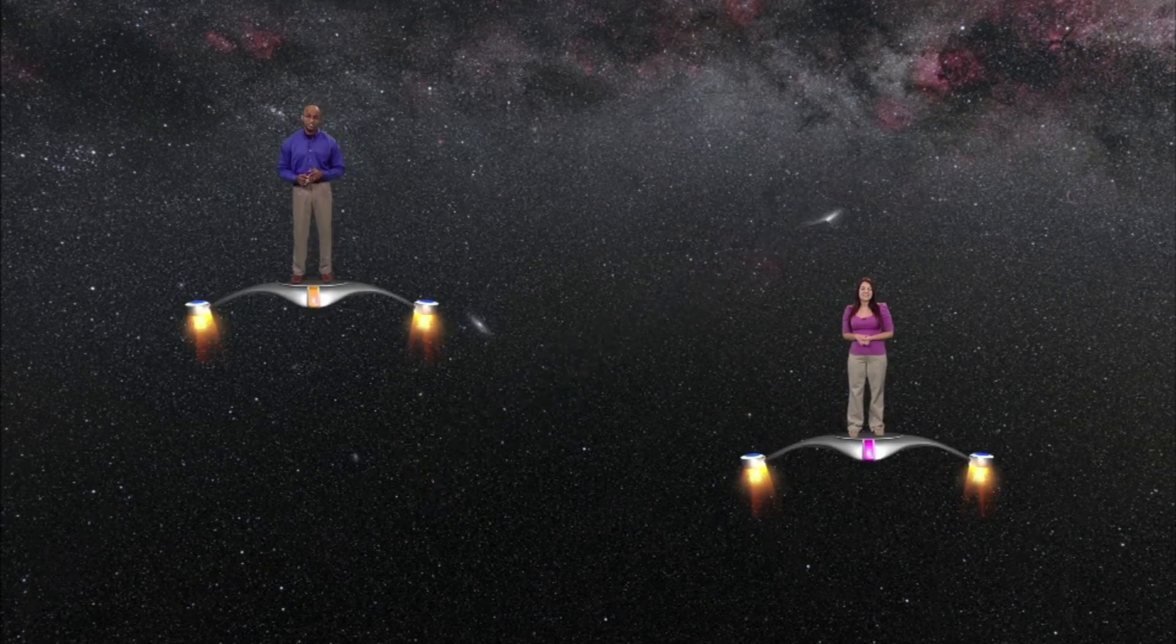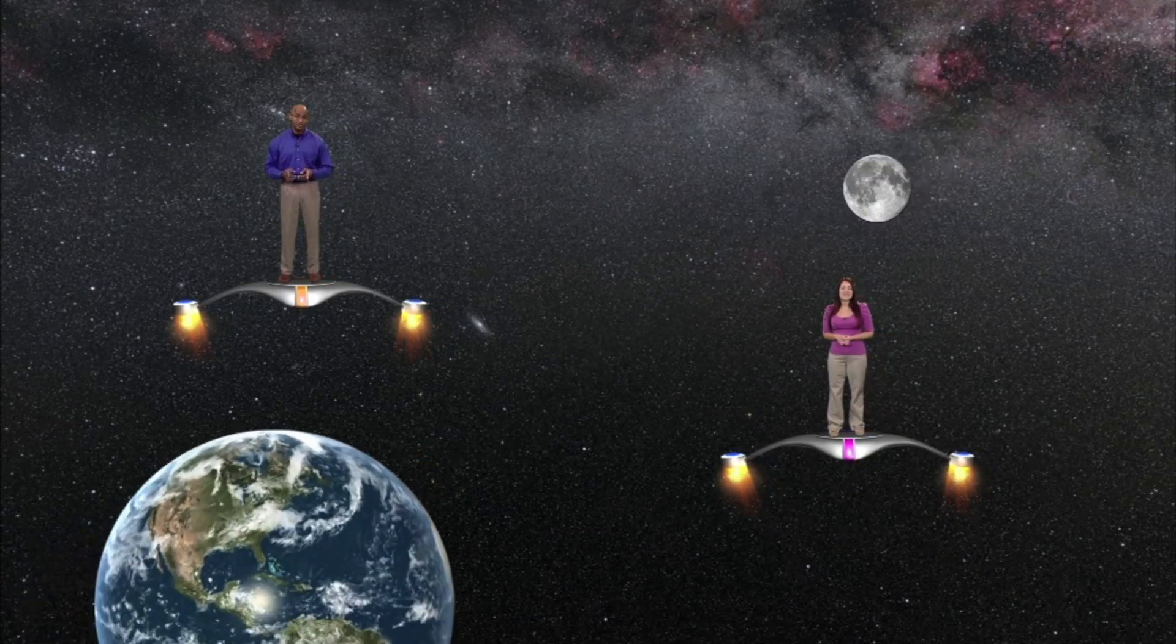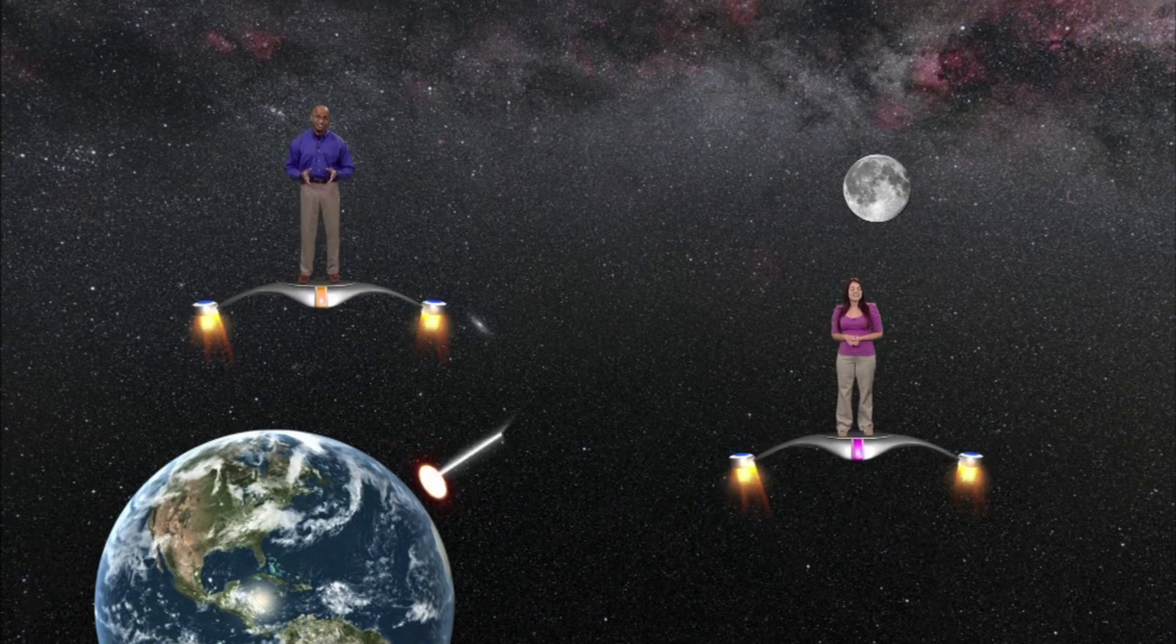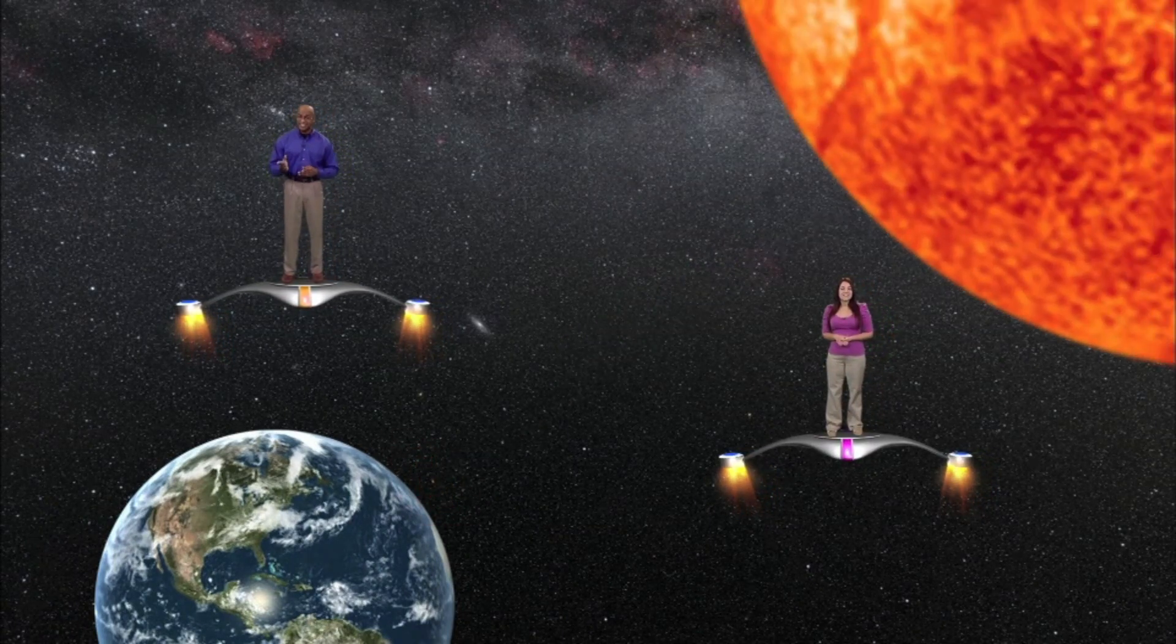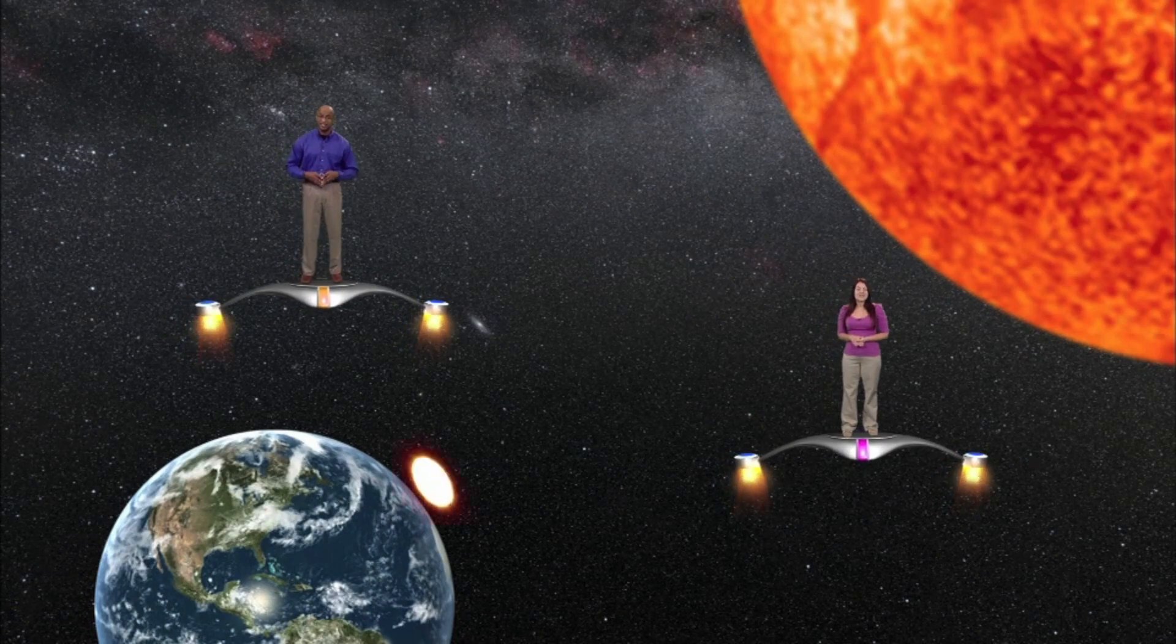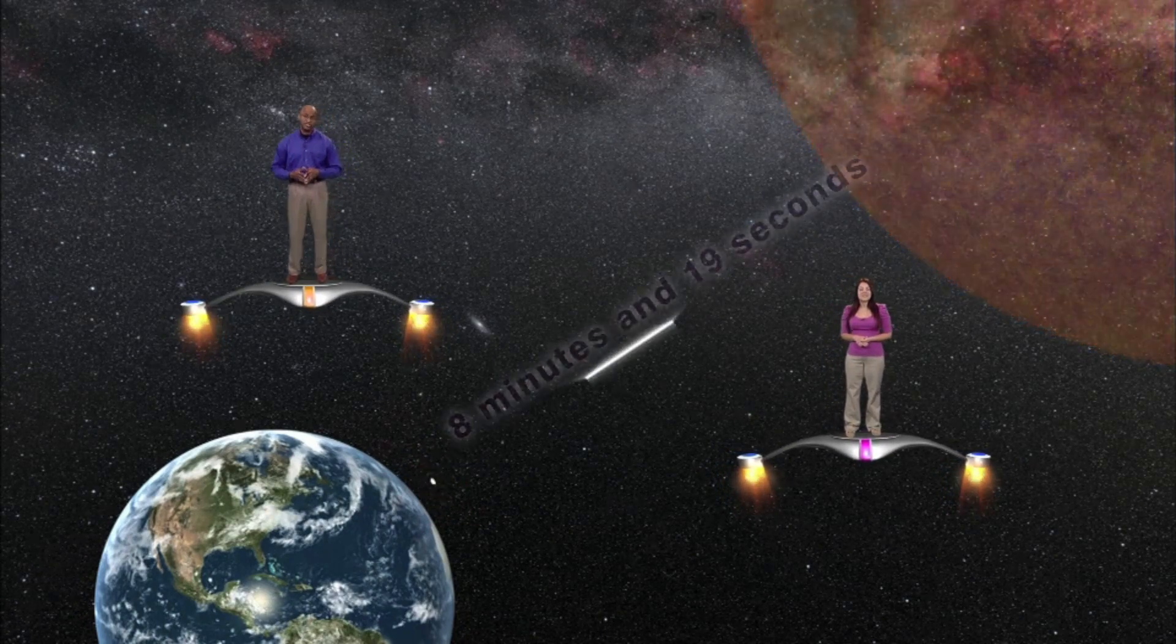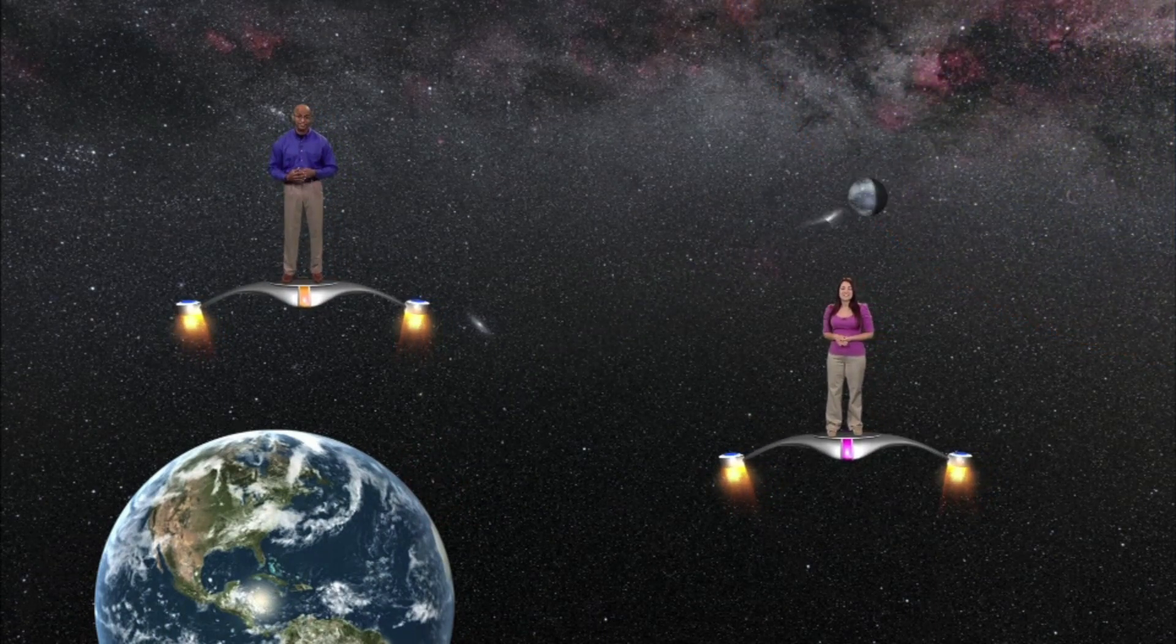This means that if you were to travel at the speed of light from the Earth to the Moon, you could make the trip in a little less than one and a half seconds. If you traveled from the Earth to the Sun at the same speed, you could make the trip in a little over eight minutes. And if you were to travel from the Earth to Pluto at the speed of light, you could make the trip in a little over five hours.